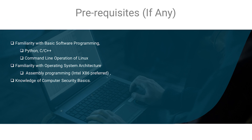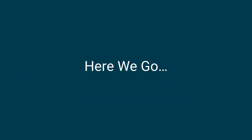As for prerequisites, you should be familiar with basic programming in Python and C++, operating system architecture, and assembly language — it doesn't need to be advanced. Some familiarity with computer security and binary debugging is needed since this course is intermediate level. If you have a binary lifestyle, this course is for you. Now let's go right into the course.